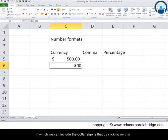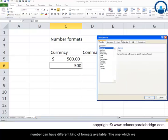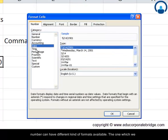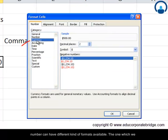The other way in which we can include the dollar sign is by clicking on this number, right-click, go to Format Cells, and you will find that this number can have different kinds of formats available.